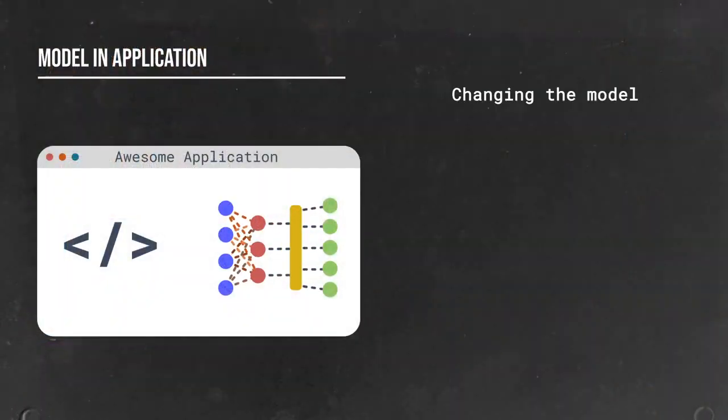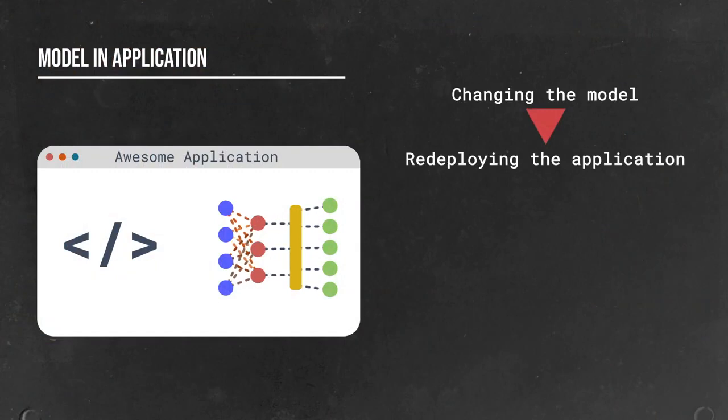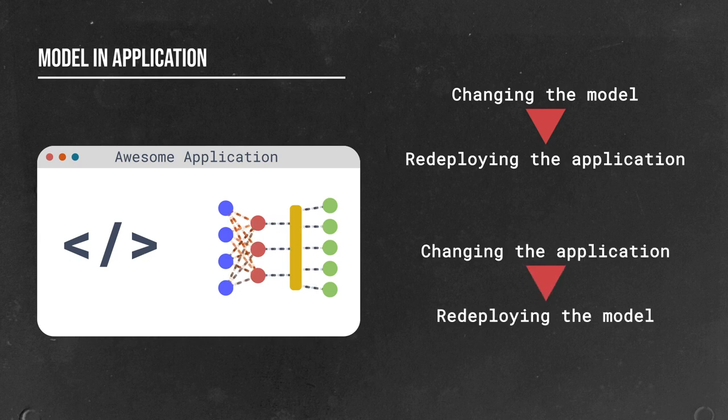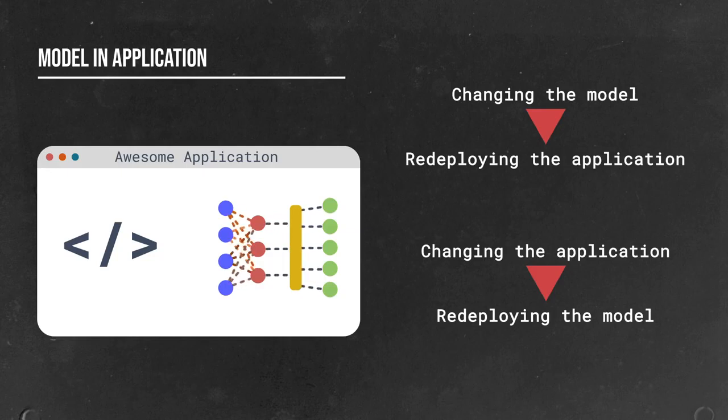This works, of course, but the brutal simplicity of it has some major drawbacks. First, it tightly couples the model to the application. Changing the model means redeploying the application. Changing the application means redeploying the model. This pattern can also lock you into restrictive sets of technology choices. If you're using a tech stack that's incompatible with your data science stack, you've got a problem.